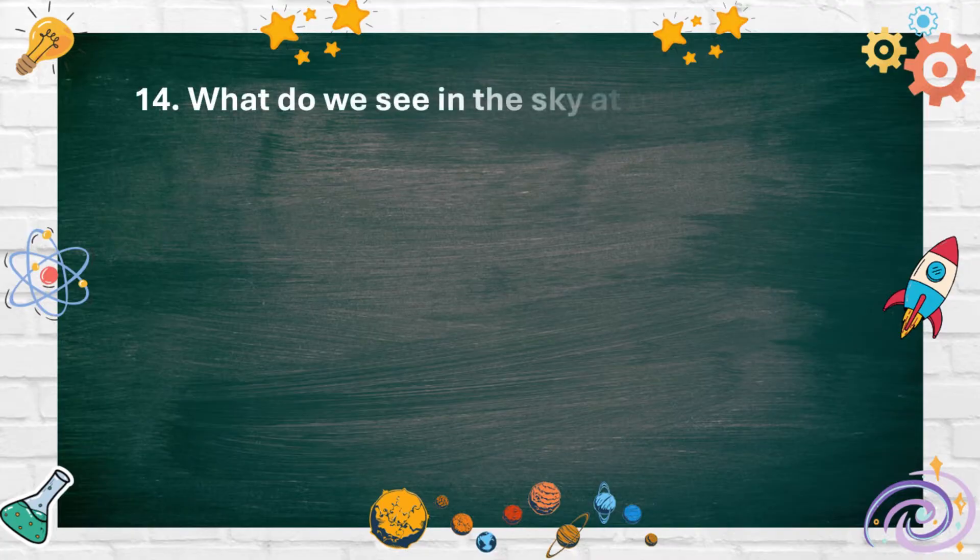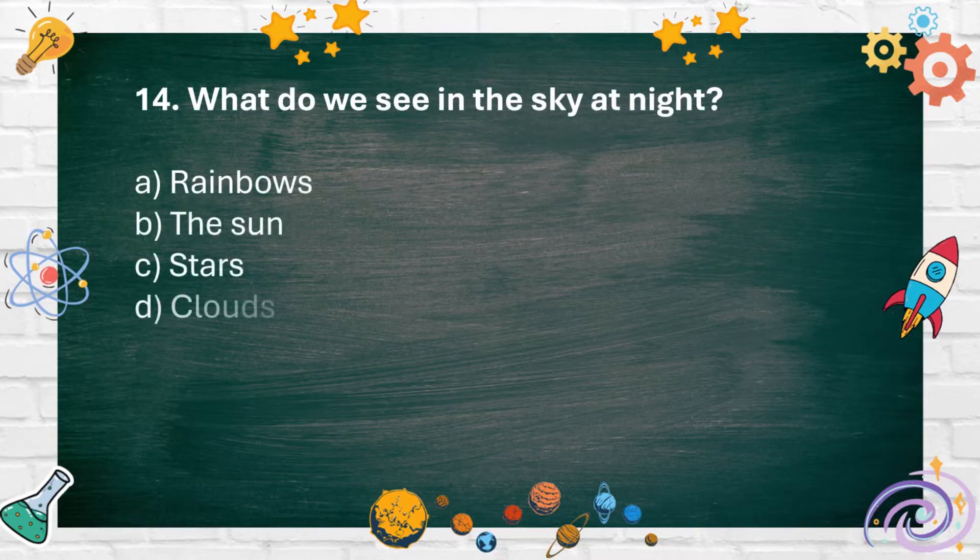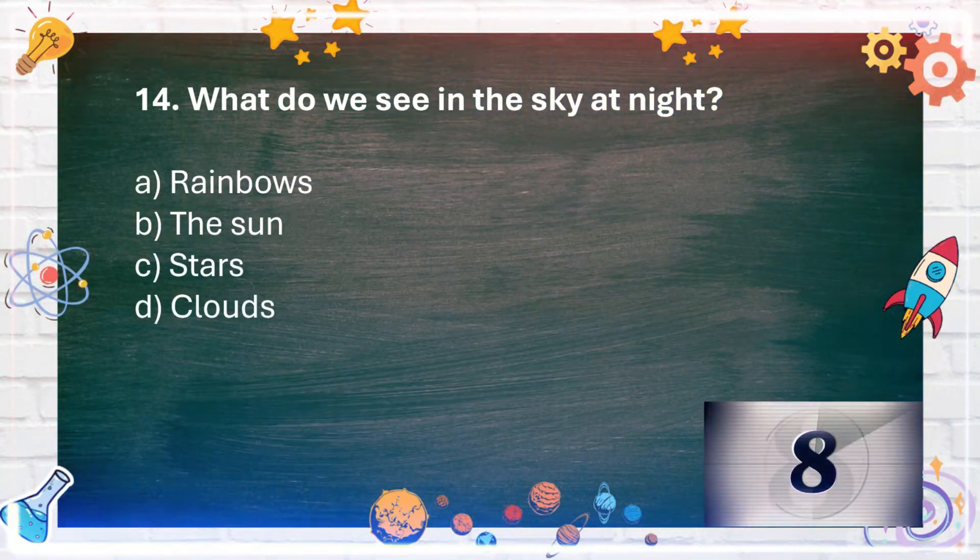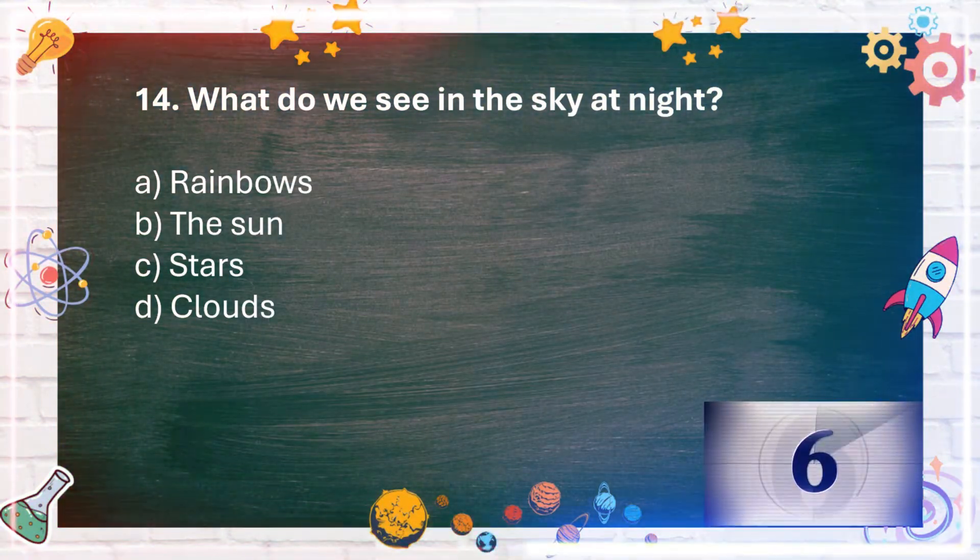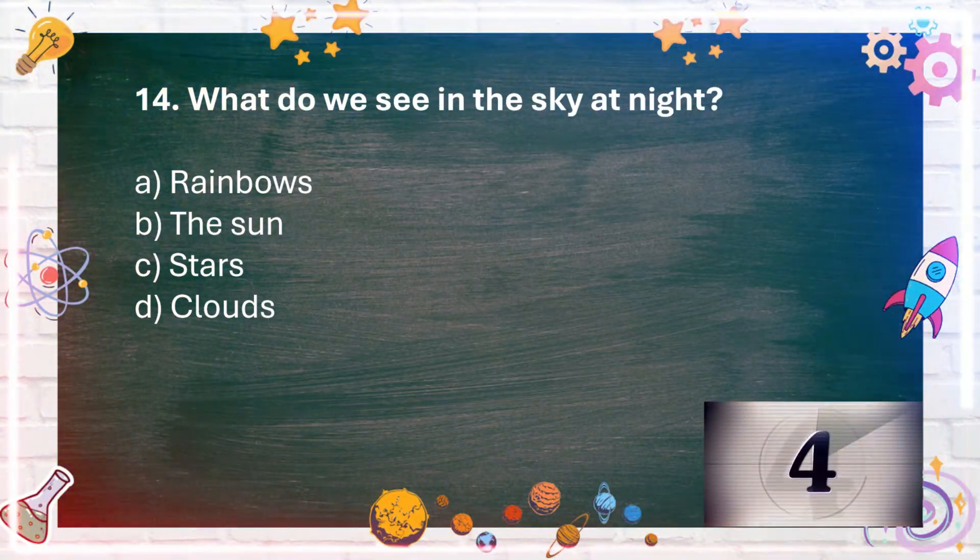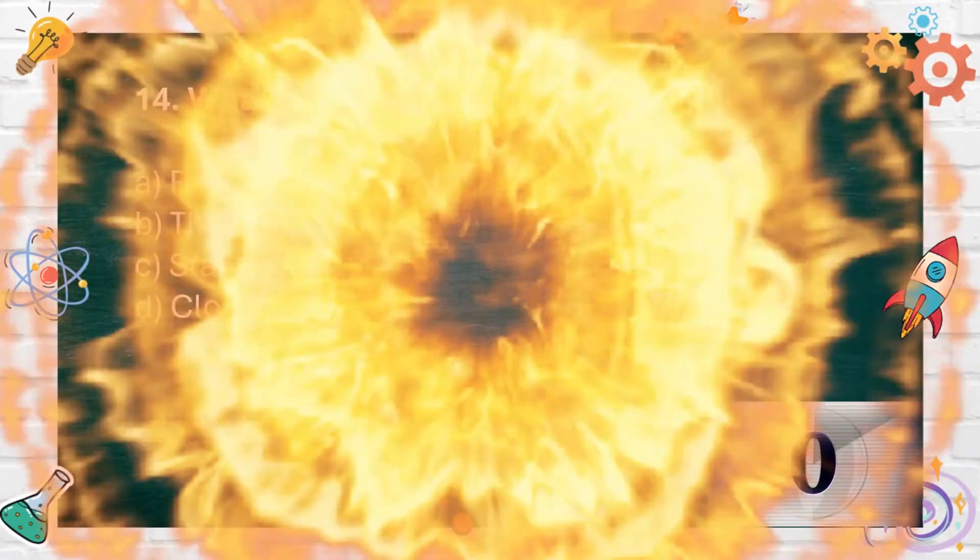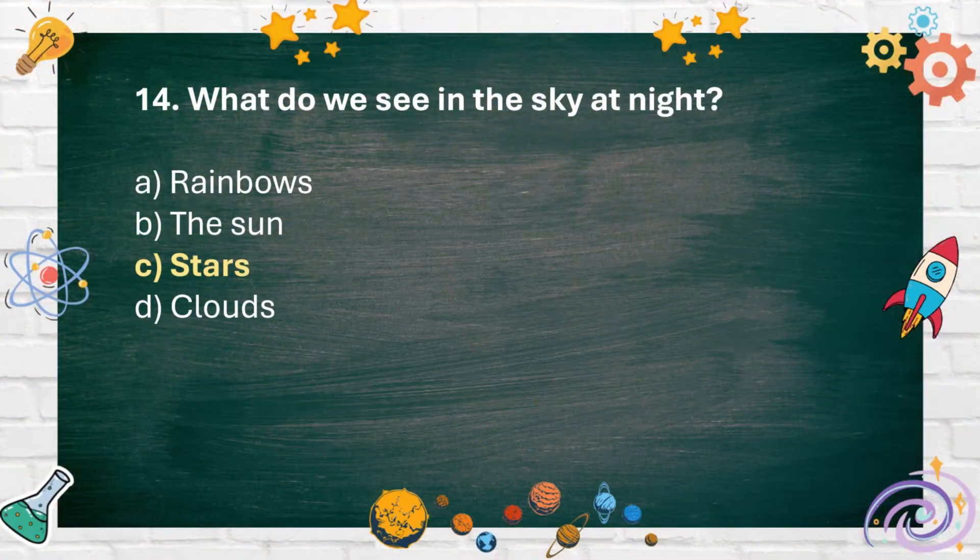Number 14. What do we see in the sky at night? A. Rainbows B. The sun C. Stars D. Clouds. The answer is C. Stars.